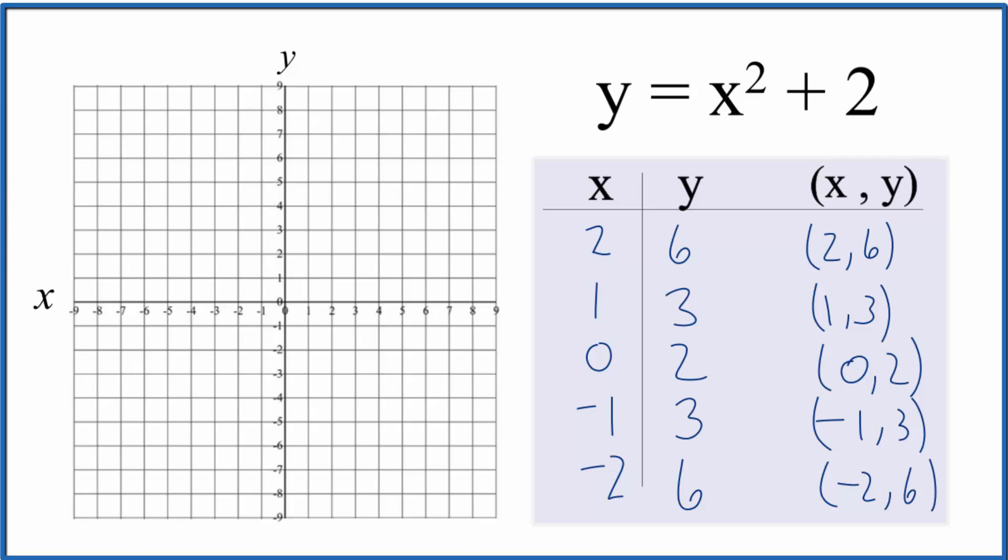So the first point, we have x is 2, y is 6. So x is 2 and y is 6. That's our first point. Next we have x is 1, y is 3. So x is 1, y is 3.